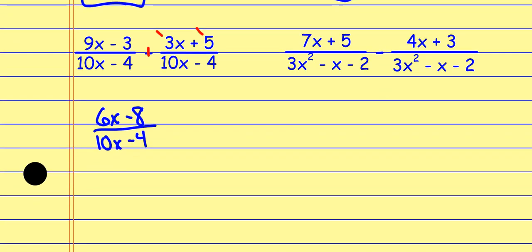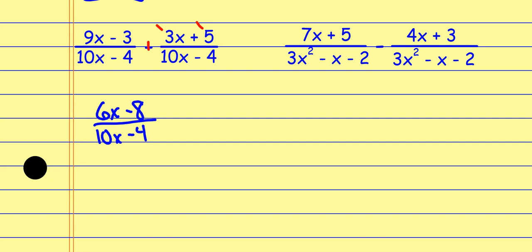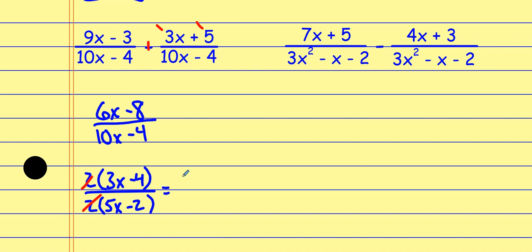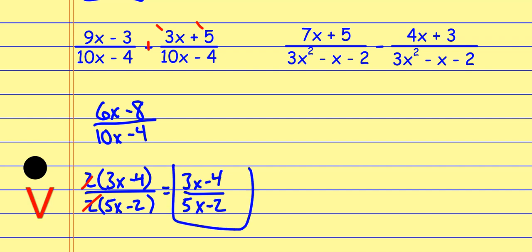Now this one I can factor. So now we're reducing the same way we've been reducing. The numerator — I can factor out a 2, which leaves me with 3x minus 4. The denominator — I can factor out a 2, which leaves me with 5x minus 2. And now the 2s cancel, so I cancel out the common factors and I'm left with 3x minus 4 over 5x minus 2. When we get to more complicated examples, it's going to be pretty unlikely that it will reduce, but we try anyway.